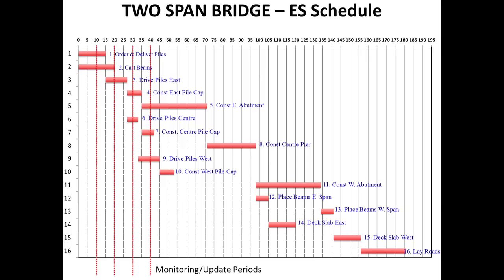I could choose to do it every 5 days, 10 days, 15 days. Let us go to some extremes. Obviously, it does not make sense for me to review it every 3 months, because within 2 updates the project will be over. If I only know the status of my project after 3 months — that some things are happening, some things are not — that is really not enough time for me to do any control action.